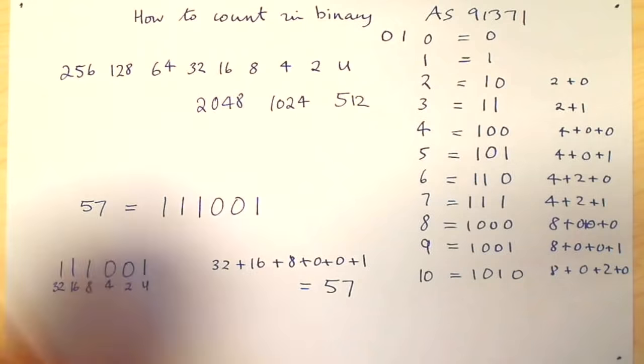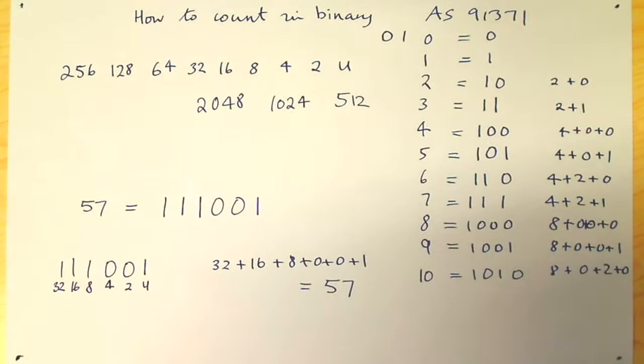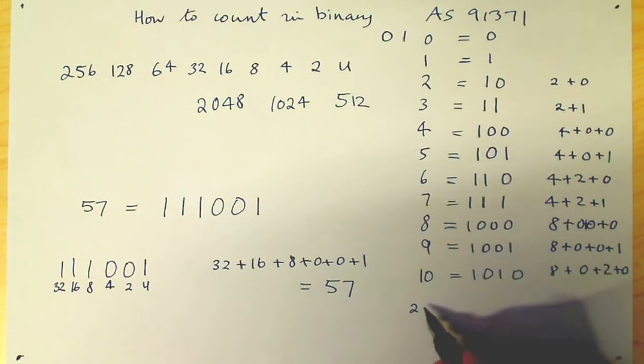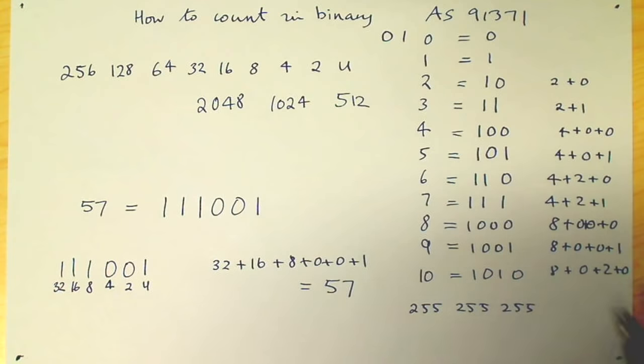For example, 256, if you are used to red, green, blue numbers. There's 255, 255, 255. If you did red, green, blue numbers that are sometimes used on computers, that's white. Why 255? Well, next lesson.